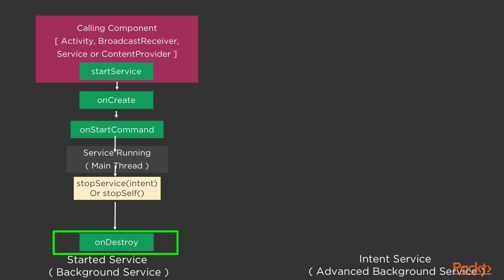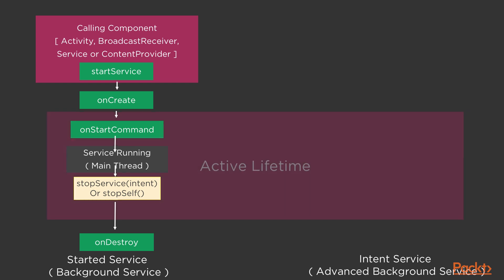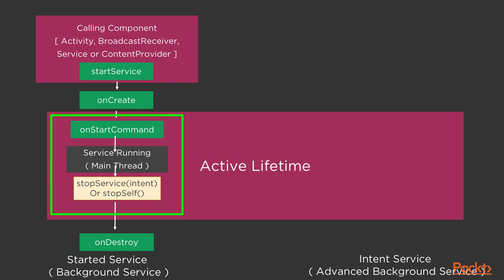The onDestroy method is the last method executed in the service, thus marking the destruction or shutting down of the service. Within onDestroy, you have to free up all resources such as nullifying variables, destroying any threads, and so on, so as to regain the device memory. For a started service, there exists an active lifetime that exists between the onCreate and the onDestroy method. As soon as the onStartCommand method is executed, the active lifetime of the background service begins.